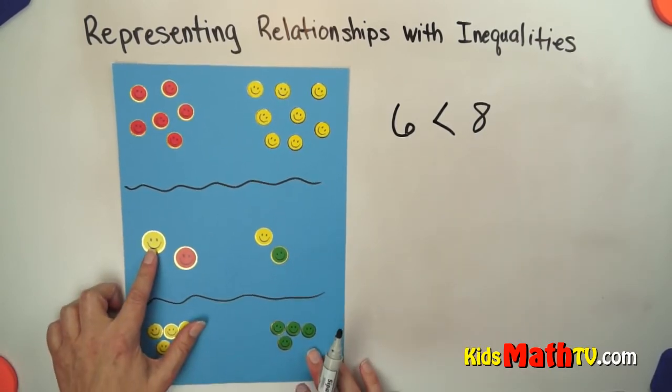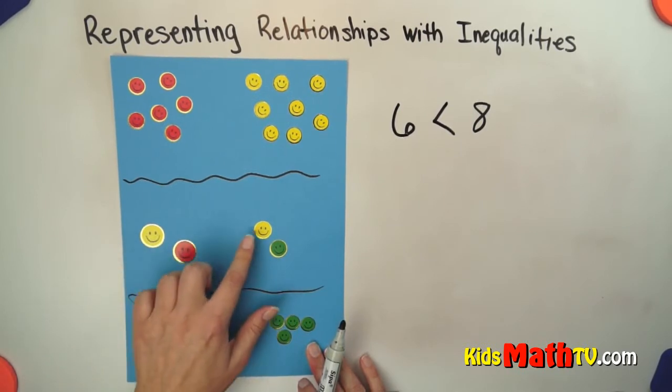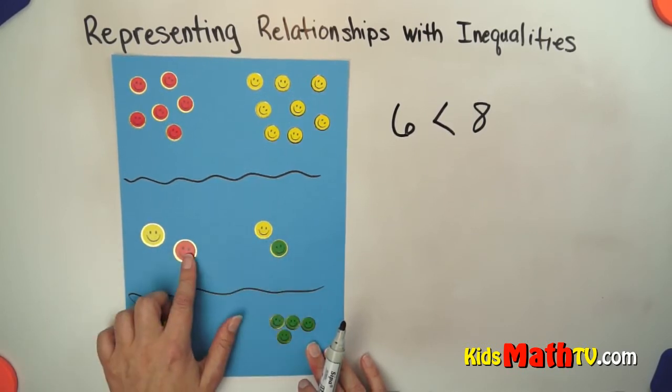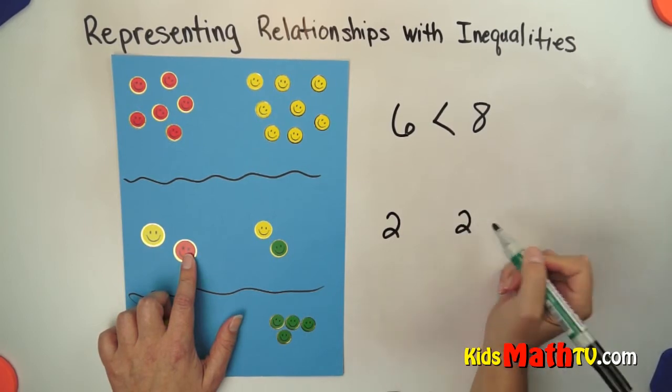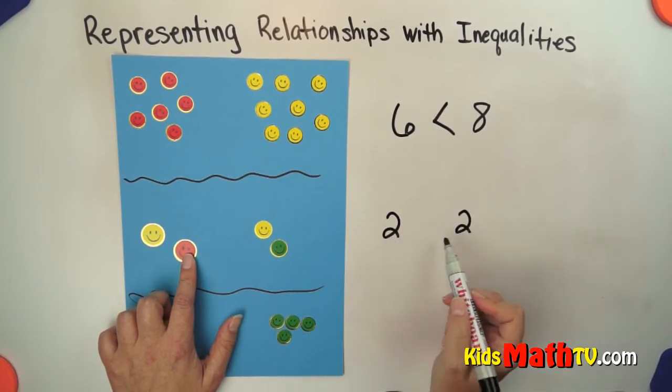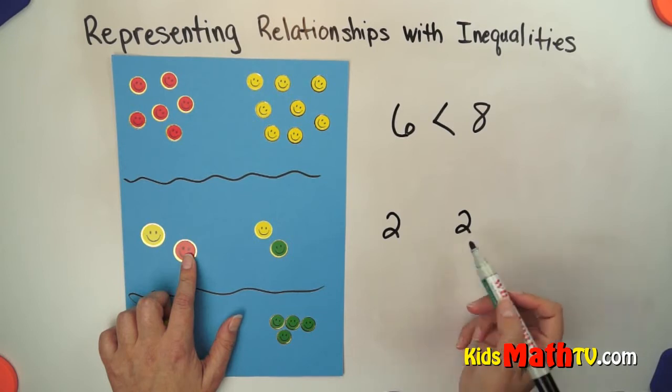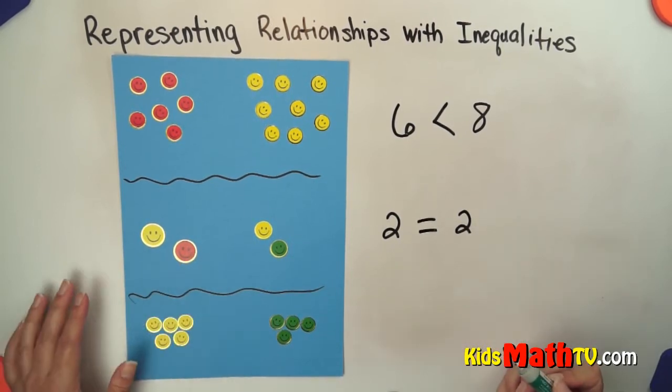Here's another relationship. I see 2 smiley faces here and 2 smiley faces here. So our 2 numbers are 2 and 2. Is 2 less than, equal to, or greater than 2? Well, 2 is the same as 2, so they are equal.